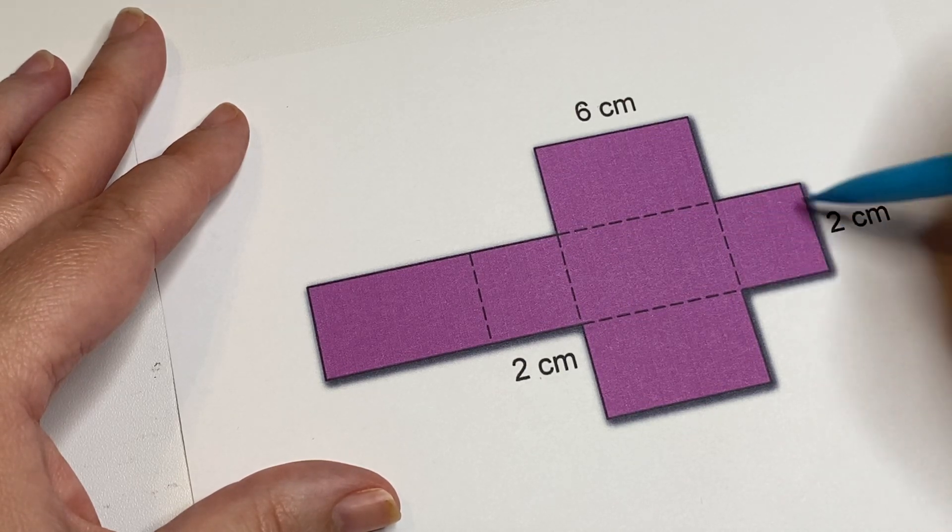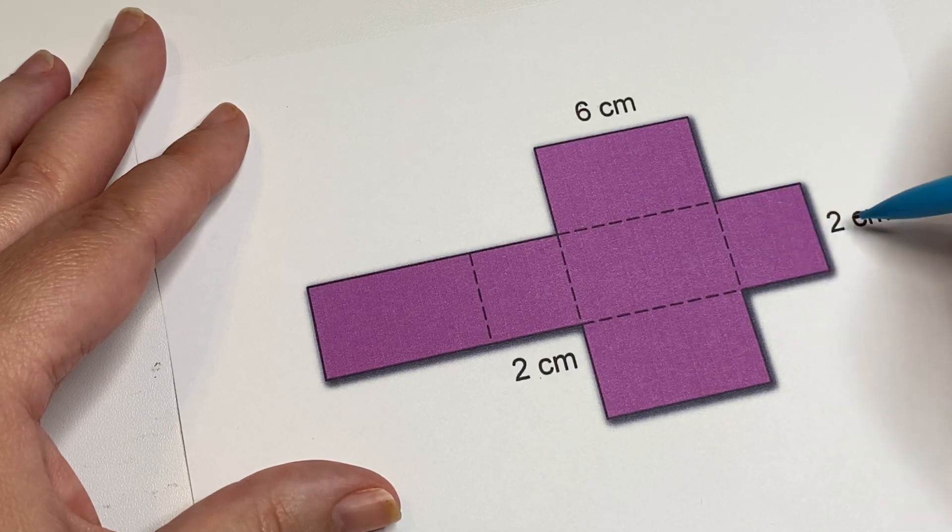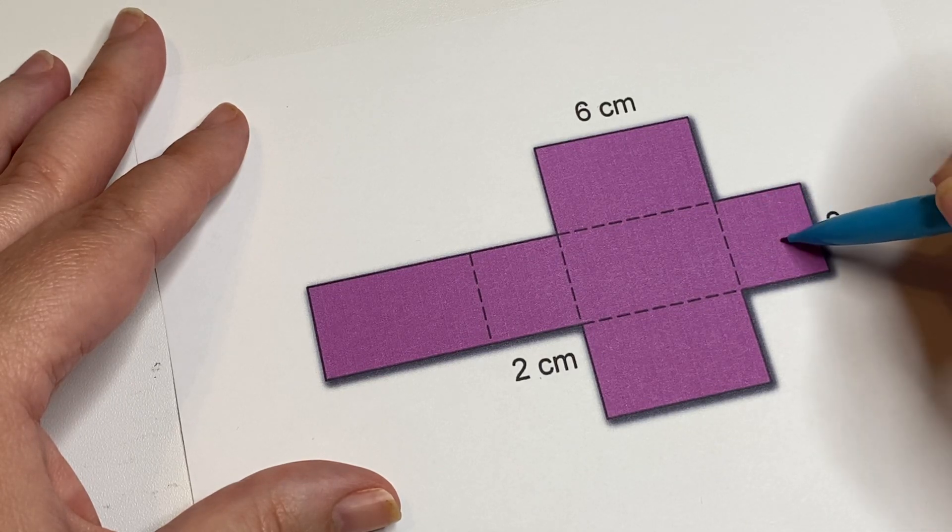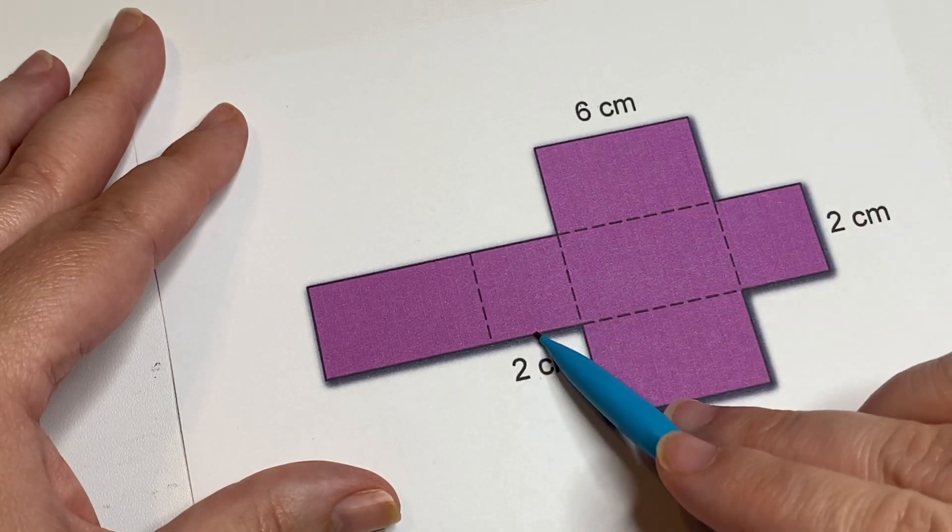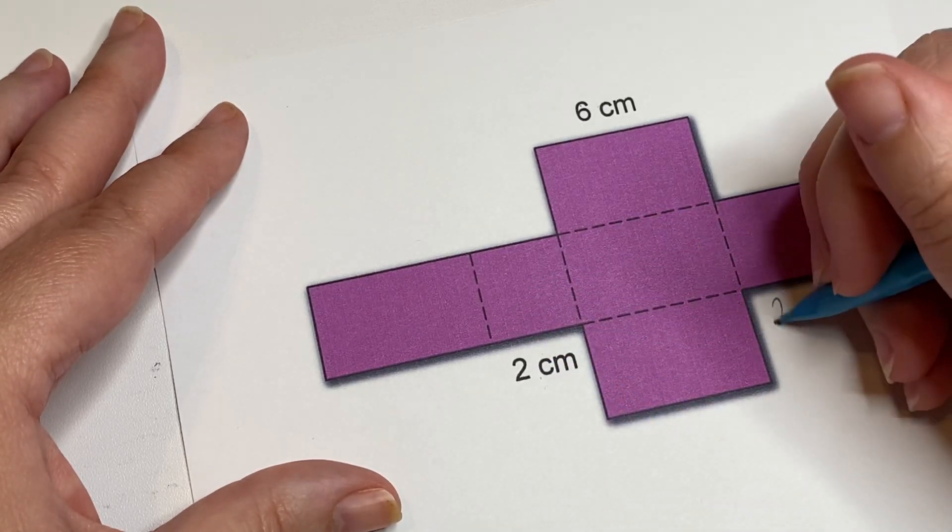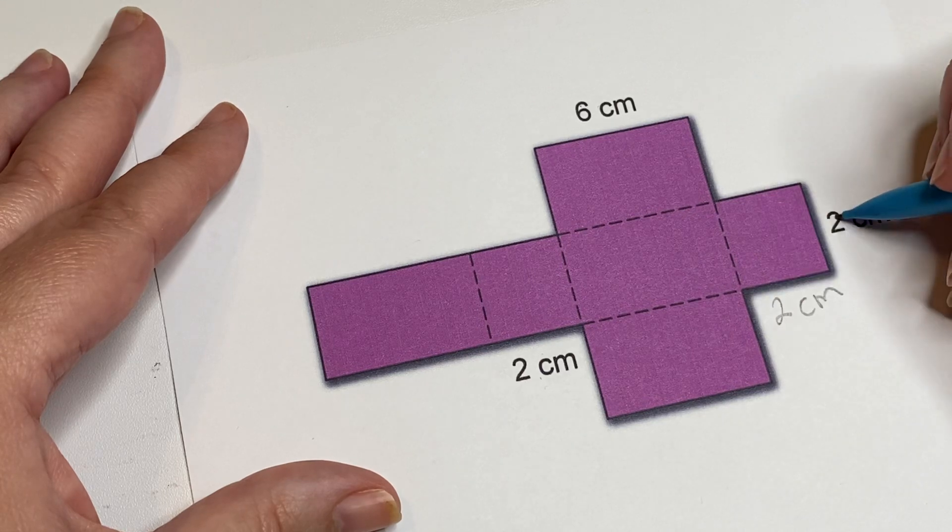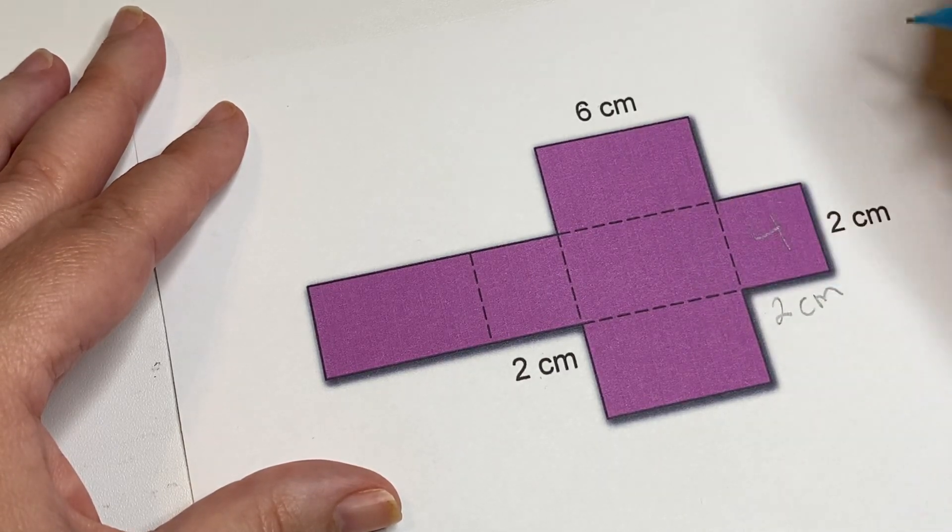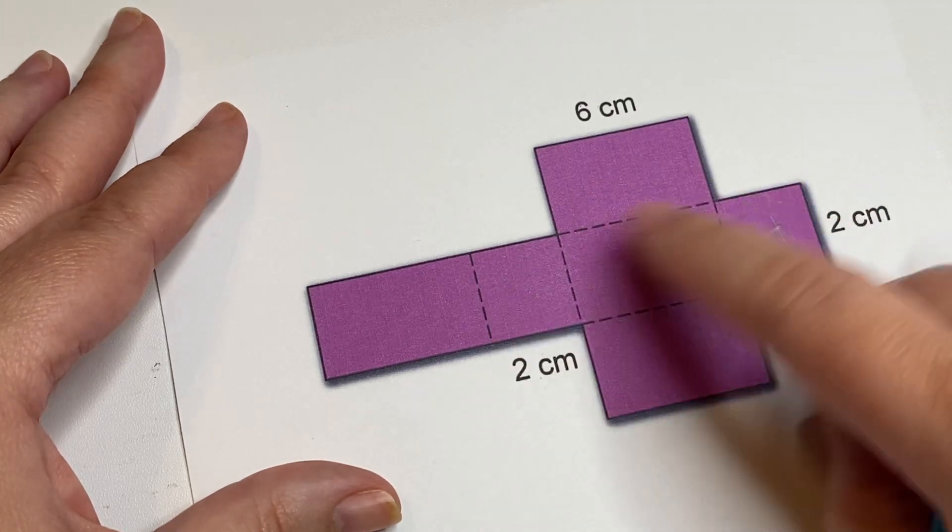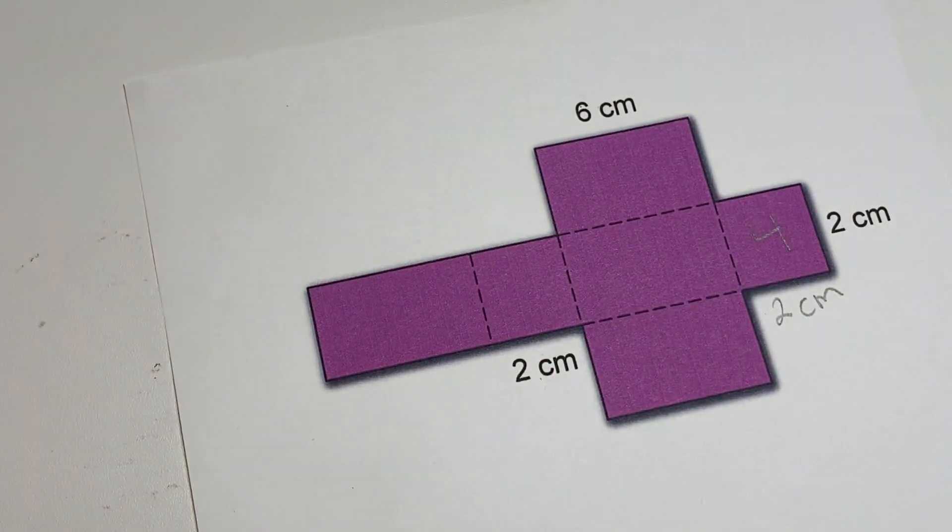...is we need to find the area of these different shapes. Because this and this are opposite of each other, they're going to be the same. Which means if this is two centimeters, this also has to be two centimeters. And two times two is four, so this is four. These two are the same.